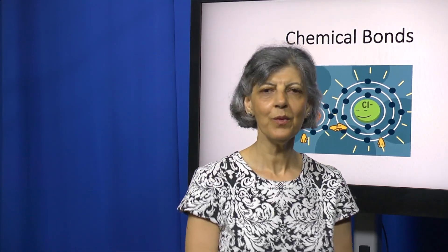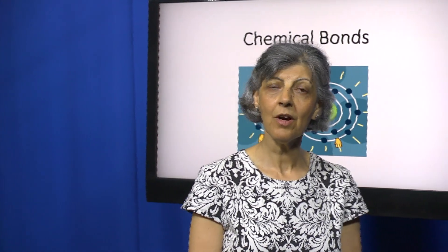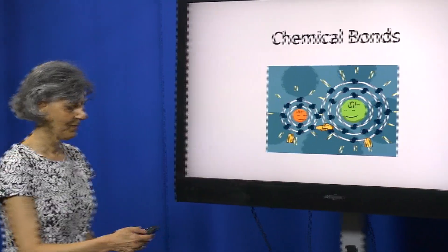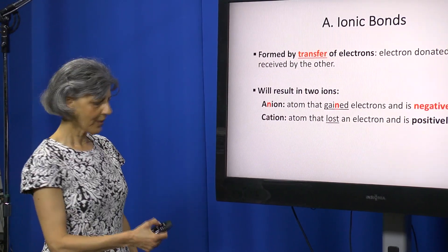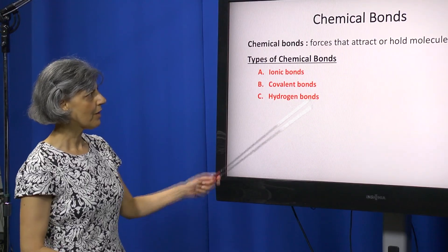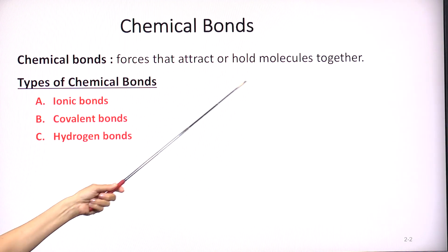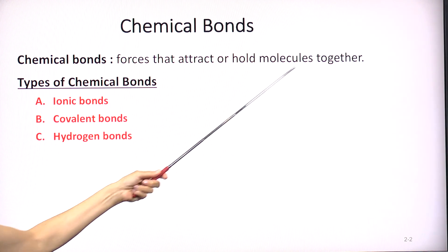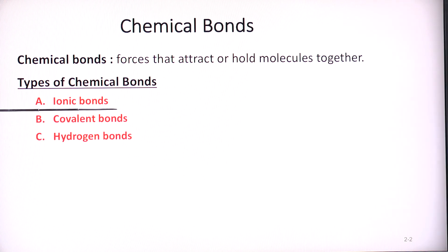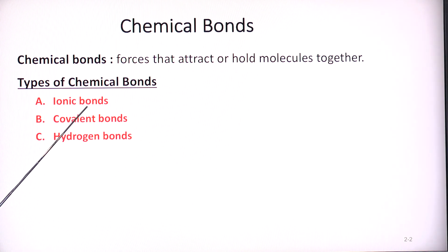Welcome back. Today we are going to discuss the topic of chemical bonding. Chemical bonds are forces that attract or hold molecules together. We're going to discuss three main types of chemical bonds: first the ionic, then the covalent, and then the hydrogen bond.